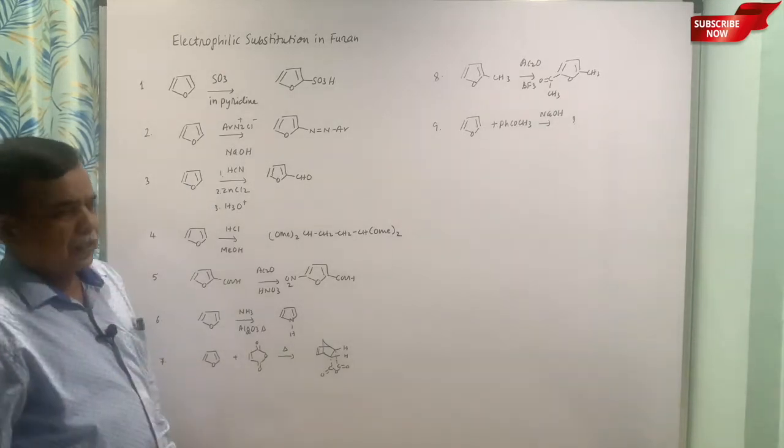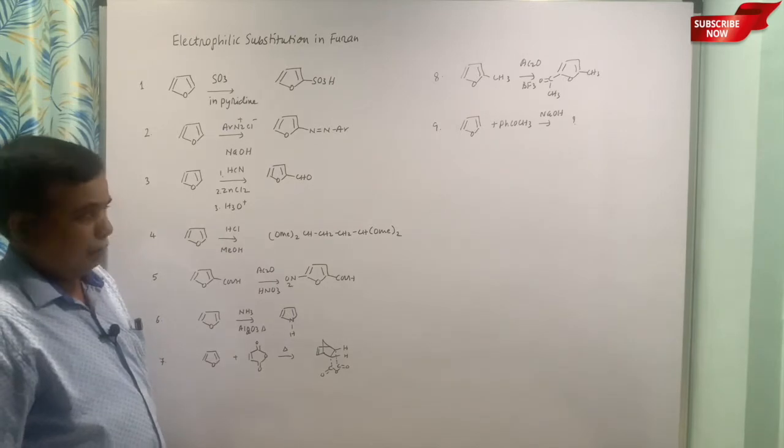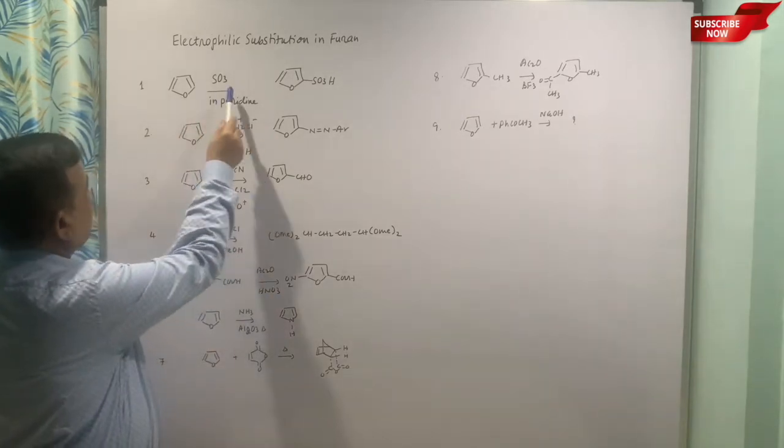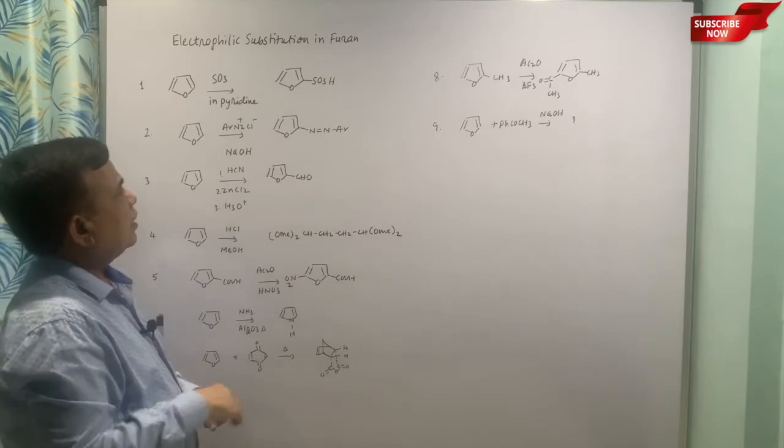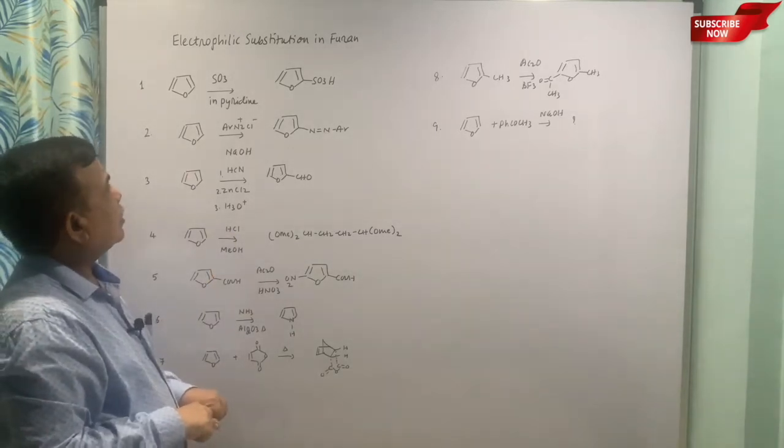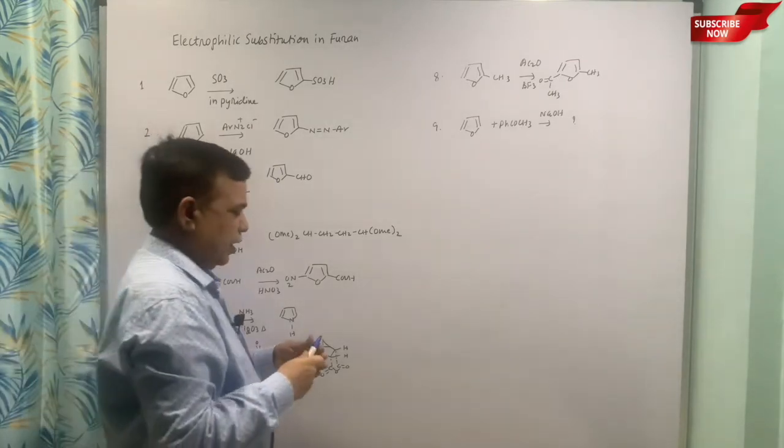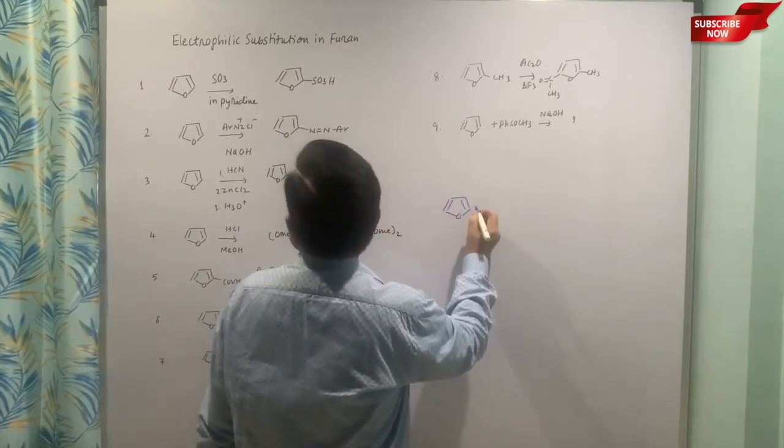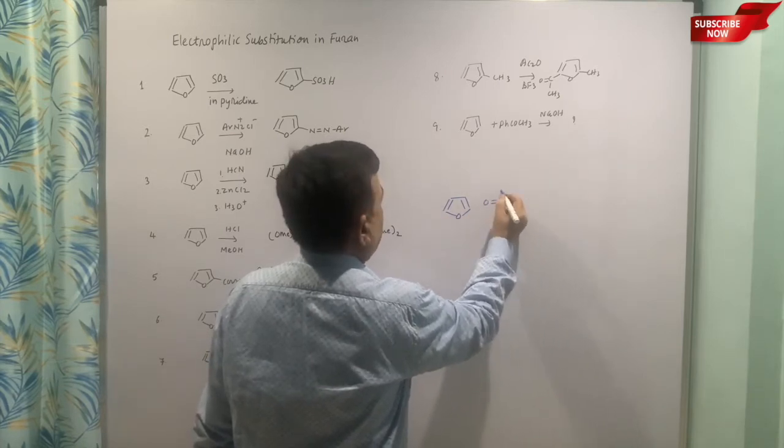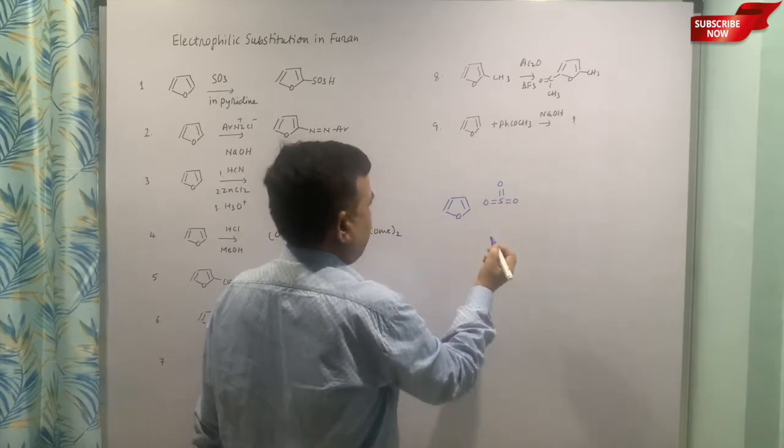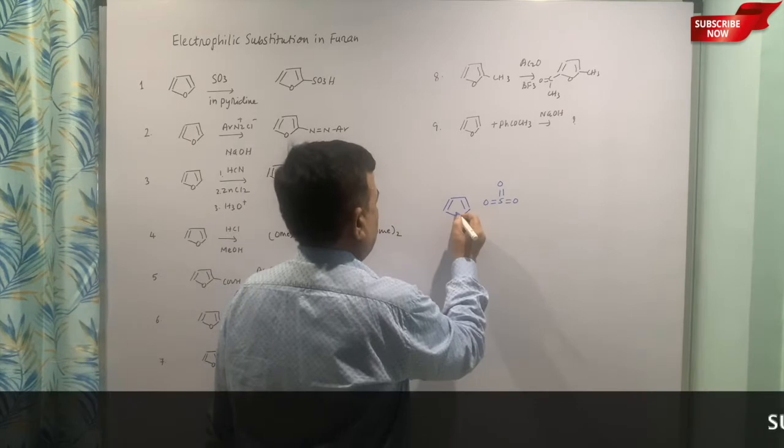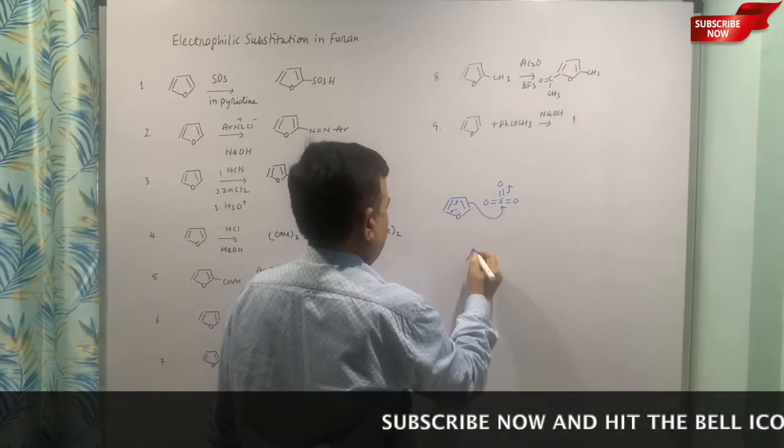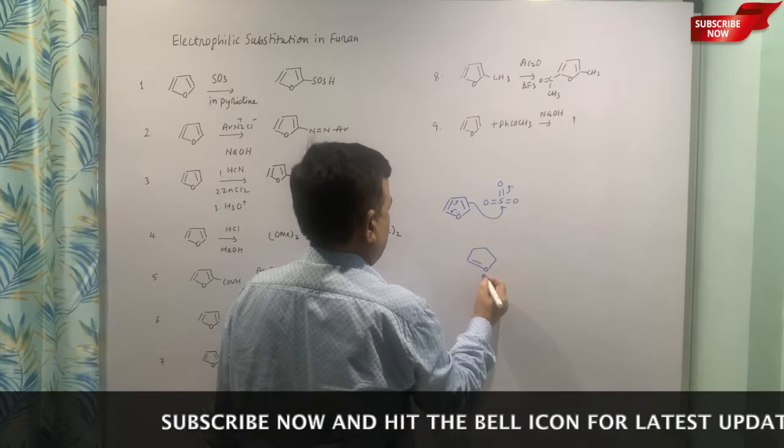The first example is this: furan is treated with sulfur trioxide in pyridine, you get the sulfonic acid. So sulfur trioxide is a neutral electrophile that is charged because the polarization is because of the oxygen and sulfur bond. Now sulfur-oxygen polarization is oxygen delta negative, sulfur delta positive. So here you can show this way, or you can directly put this pi bond.